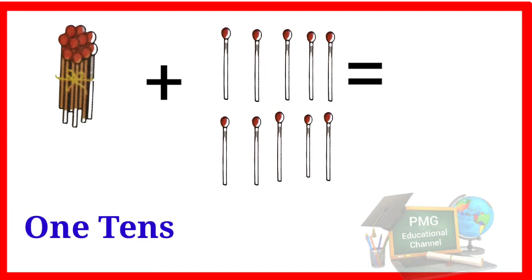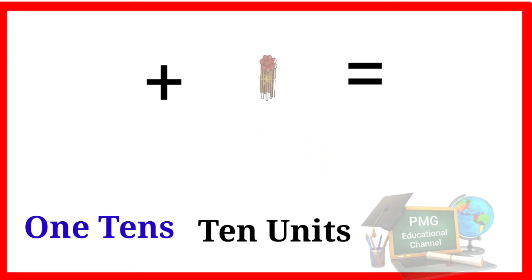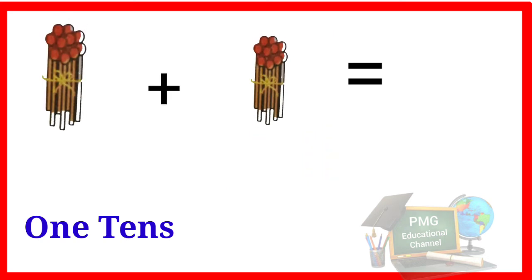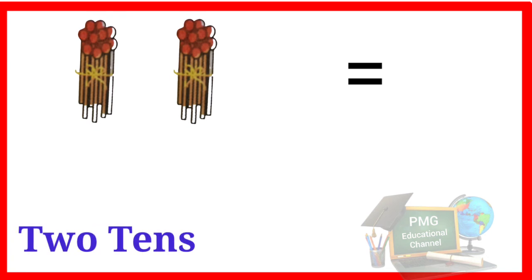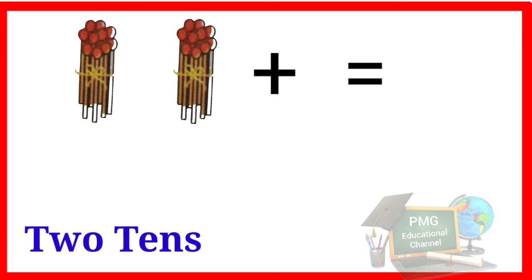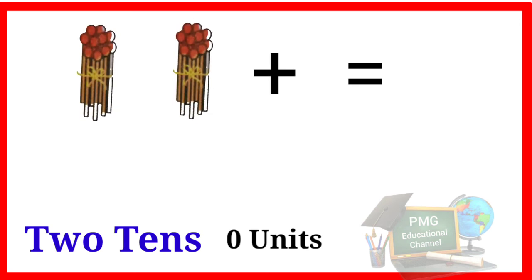Then look at this carefully. 1 tenth and 10 units. Now look carefully. Here is 10 units. So we will make a bunch of these 10 units, so it becomes 1 tenth. 1 tenth plus 1 tenth becomes 2 tenths. Here is the first 1 tenth, second 1 tenth becomes 2 tenths. 2 tenths, 0 units - the number becomes 20. Write down 20. Here is 20.